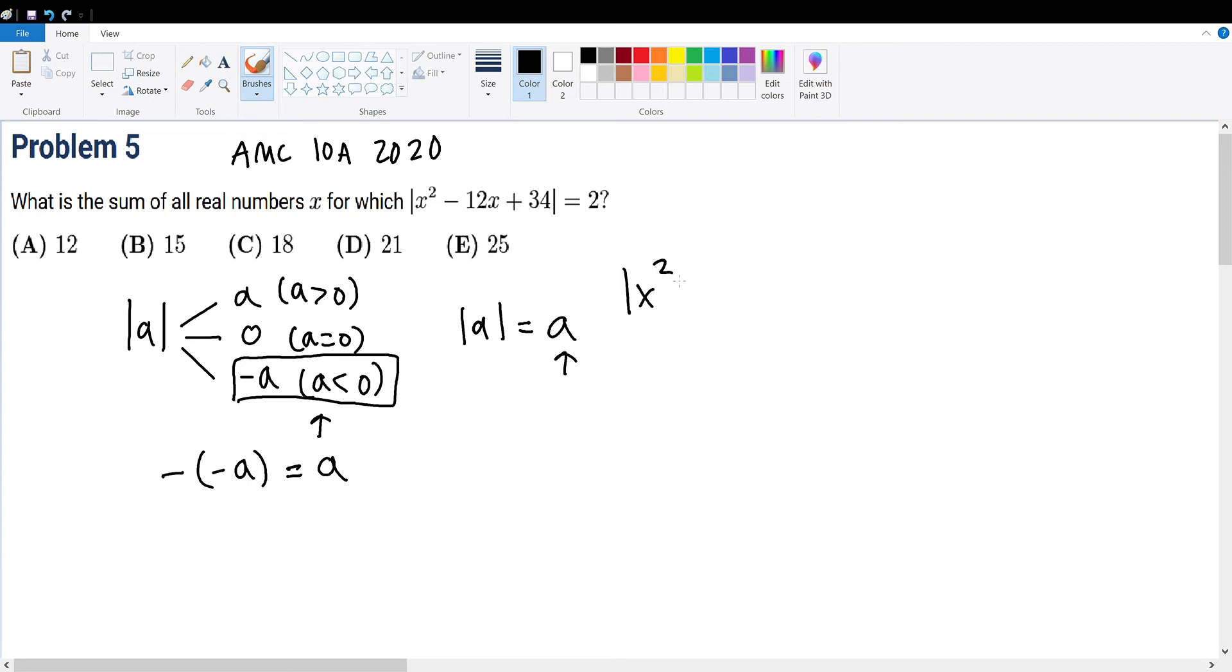So the absolute value of x squared minus 12x plus 34 can likewise have three outcomes. It can be positive, it can be 0, or it can be negative. Obviously, it cannot be 0, because 0 cannot equal 2. So it can only have either a positive or negative outcome.